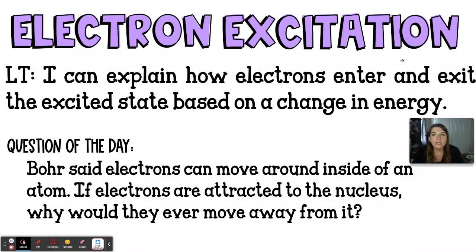Today's question of the day: Niels Bohr said that electrons can move around inside of an atom, so if the electrons are attracted to the nucleus, why would those electrons ever move away from the nucleus?